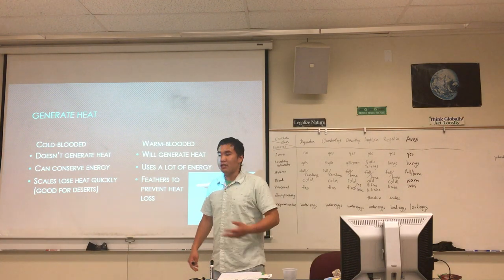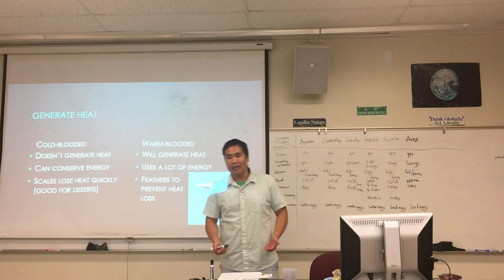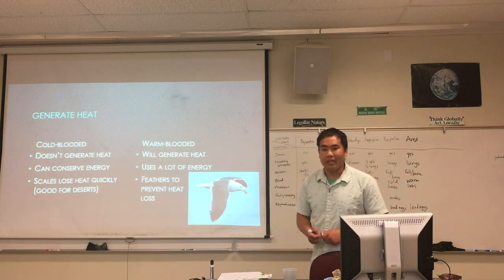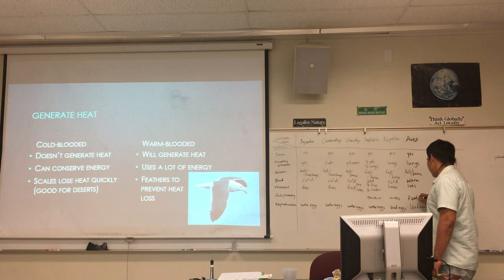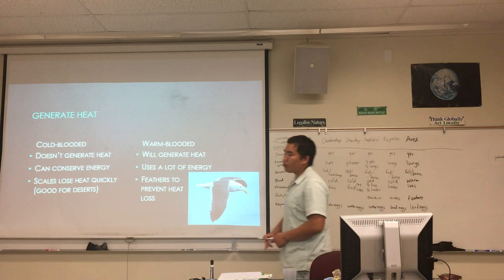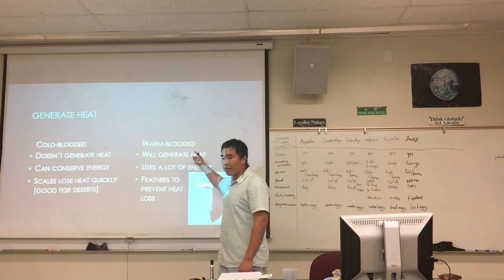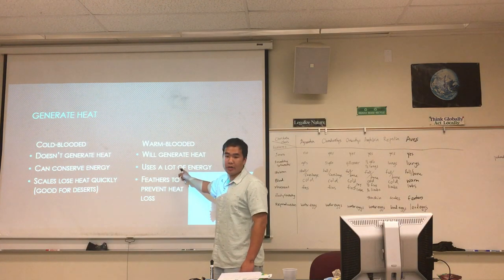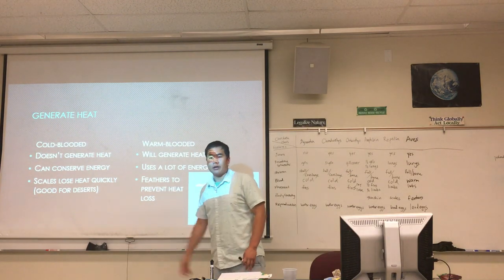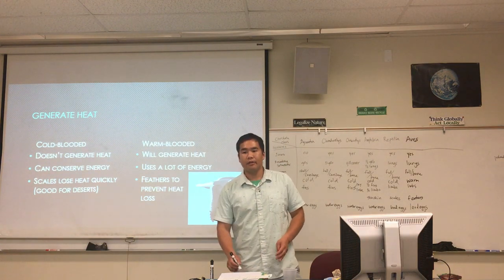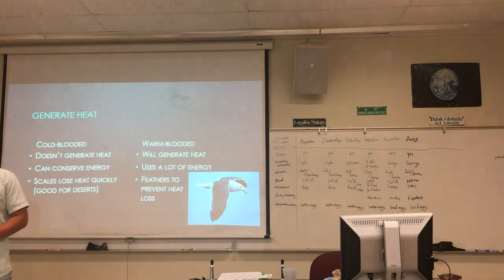Scales, in contrast, are very bad at retaining heat — they lose heat quickly, which actually makes reptiles suitable for hot deserts. Mammals and birds in the desert struggle because they're generating heat internally while the sun beats down externally, causing overheating. So let's add feathers to the body covering column in our table. Feathers prevent heat loss so the bird doesn't have to keep regenerating heat, saving energy.